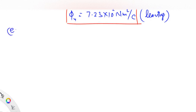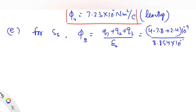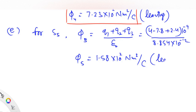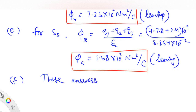For the fifth part, for surface s5, φ5 = (q1 + q2 + q3) / ε₀. This is (4 − 7.8 + 2.4) nanocoulombs × 10⁻⁹ divided by 8.854×10⁻¹². φ5 comes out to be +1.58×10² N·m²/C. The positive sign means the flux is leaving through the largest Gaussian surface s5.